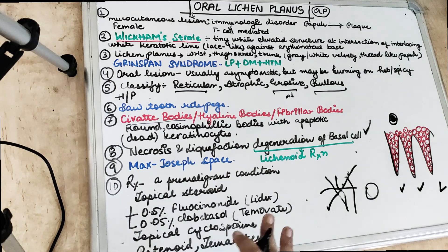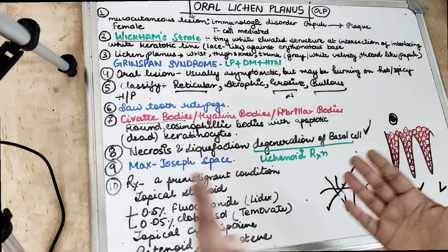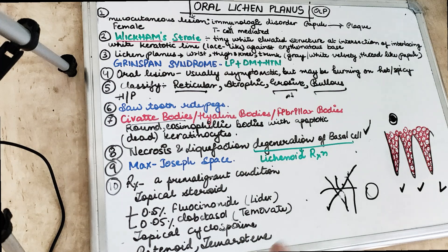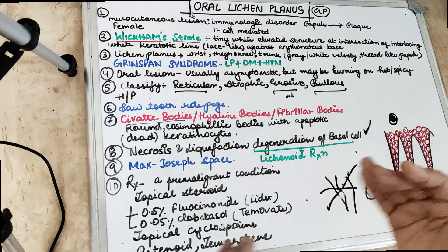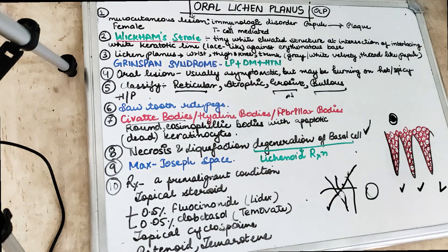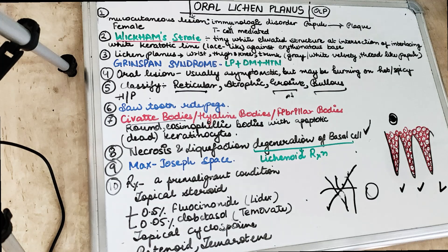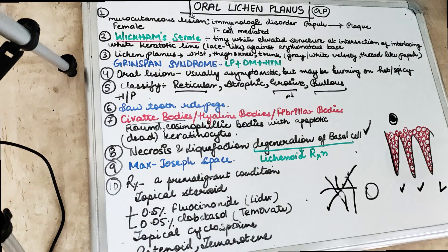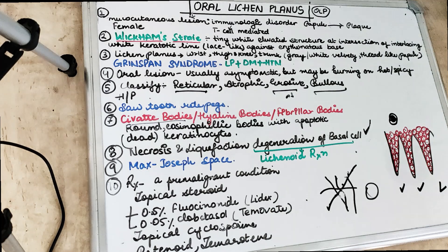To summarize oral lichen planus: the characteristic feature is Wickham striae — intersecting, interlacing white lines on an erythematous base, forming lace-like structures on the red oral mucosa, with tiny white elevated dots on those white lines. This is the typical feature of oral lichen planus. If you enjoyed the video, give it a thumbs up and comment below. Till then, keep reading, keep learning, stay motivated, and I'll see you in the next video. Thank you.